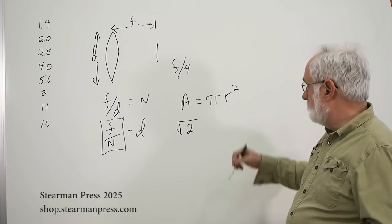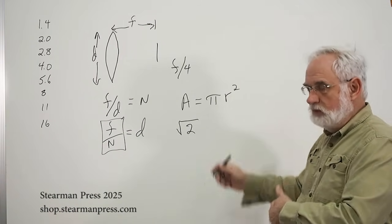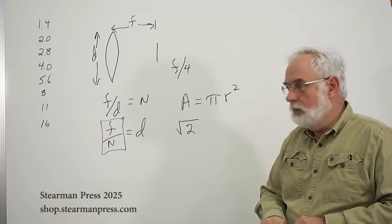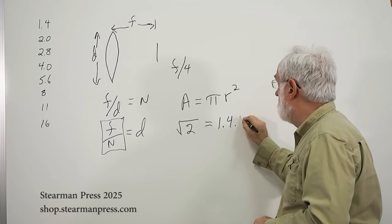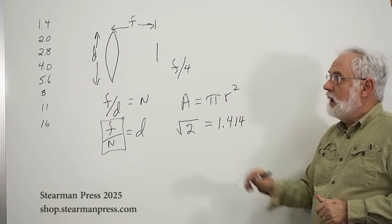And, that shouldn't be a big surprise, because we've got a squared factor in here, and we're making it twice as big. So, it's not a big surprise, we ended up with a square root of two, which happens to equal 1.414.